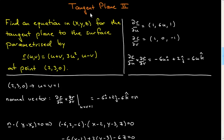I've decided to record one more quick screencast on tangent planes, and I give the question in a slightly different way this time. Find an equation in three variables x, y, z for the tangent plane to the surface parametrized in the following way, and you're supposed to do this at the point x equal 2, y equal 3, z equal 0.